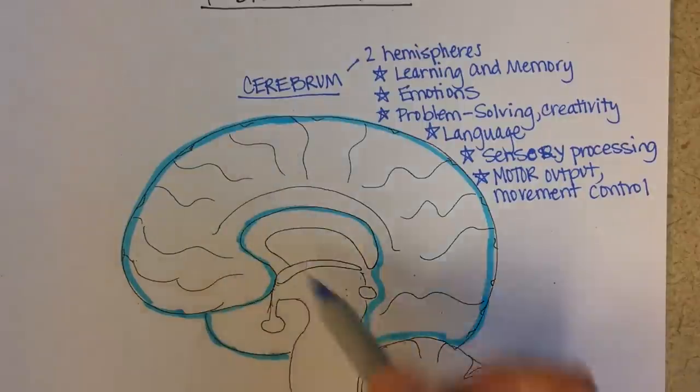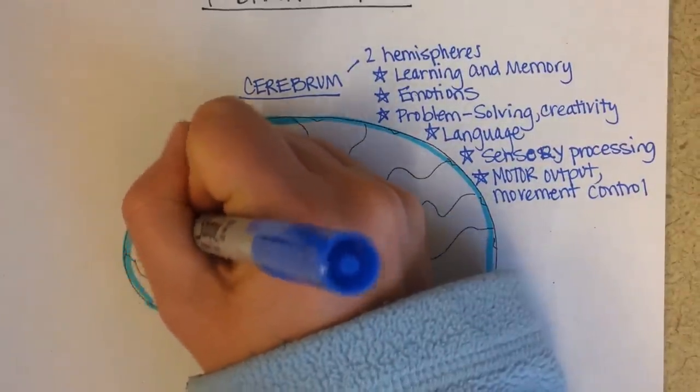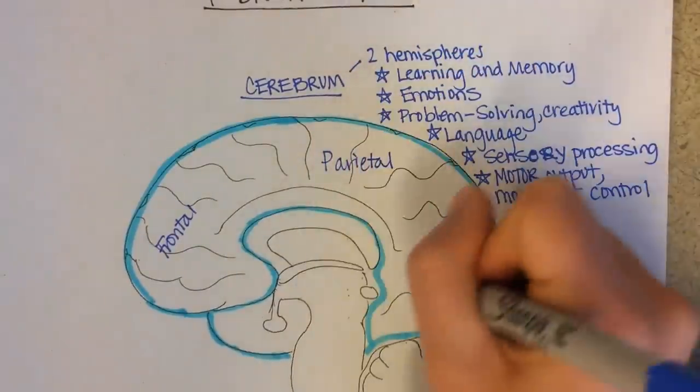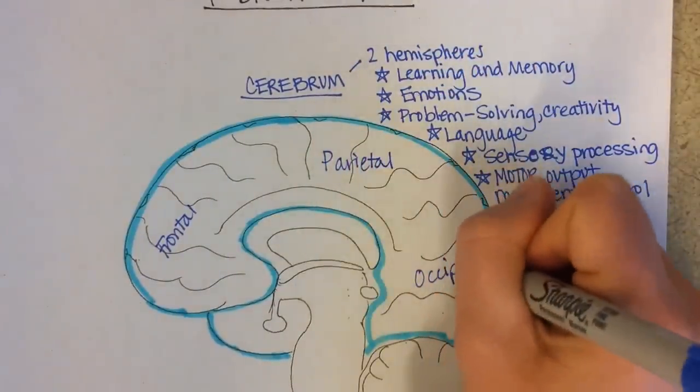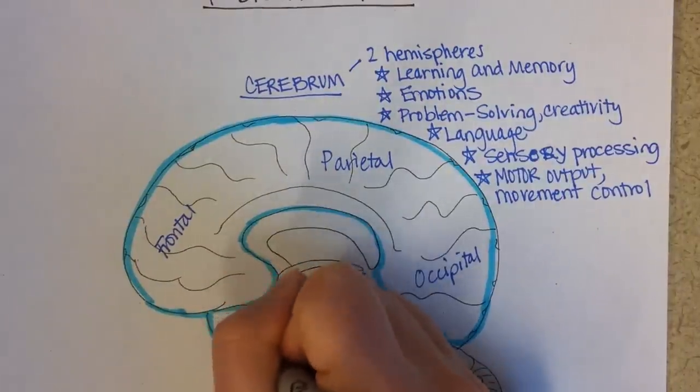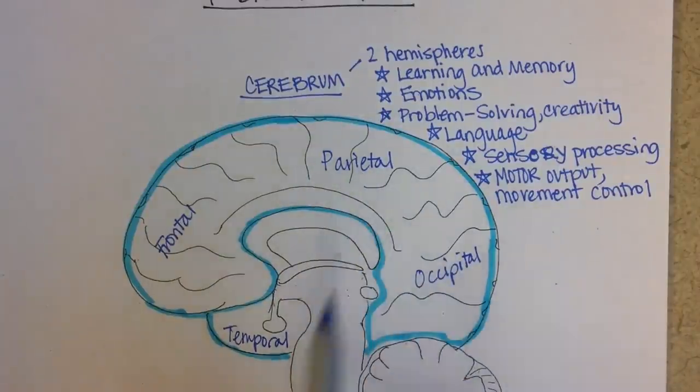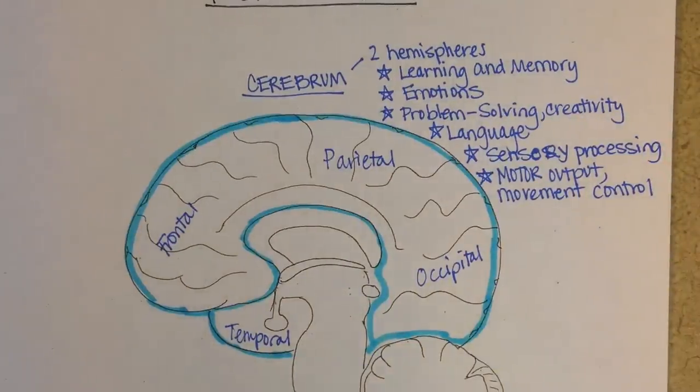It's divided into these four lobes. I'll just briefly put them here. The frontal lobe, the parietal lobe, the occipital lobe, and the temporal lobe. The parietal lobe is paired. You've got two on either side. And same with the temporal.